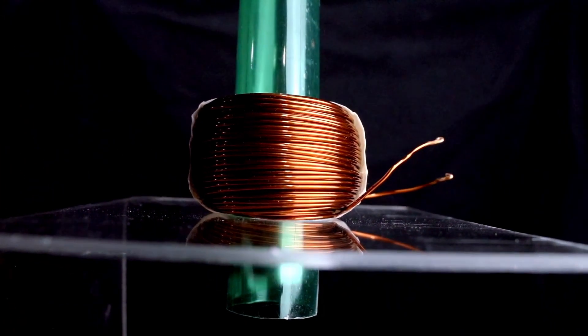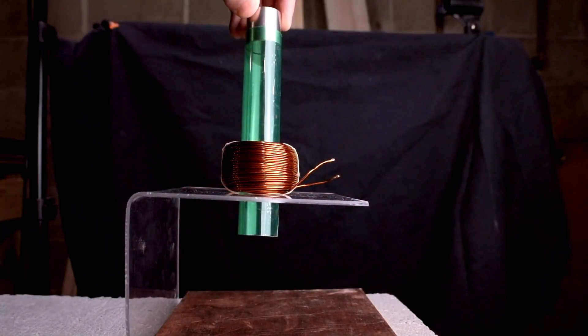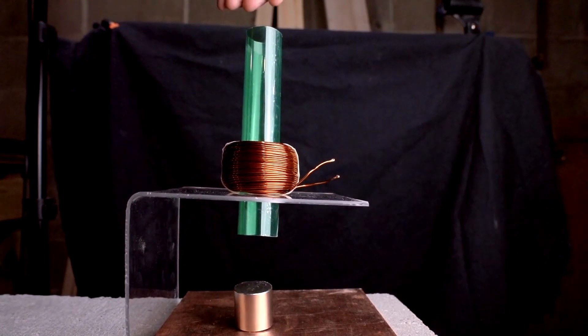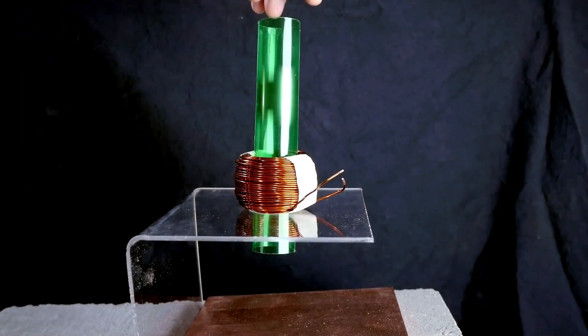No slowing down at all. If the resistance to movement we saw with the copper plate was an inherent property of copper, nothing to do with electricity, the magnet should still slow down even with a disconnected circuit.